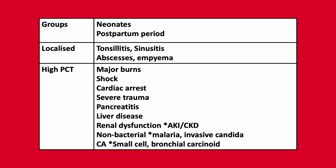Important considerations: patients with a localised infection can have a smaller increase in procalcitonin in comparison to those with a generalised insult — for example, tonsillitis, sinusitis, abscesses and pyema. Interestingly, some patient groups including neonates and those in the postpartum period can show elevation of procalcitonin, as can those with a major insult including burns, shock, cardiac arrest, trauma, pancreatitis, liver dysfunction and renal dysfunction, and those with non-bacterial infections including malaria, and also malignancy including small cell and bronchial carcinoid.